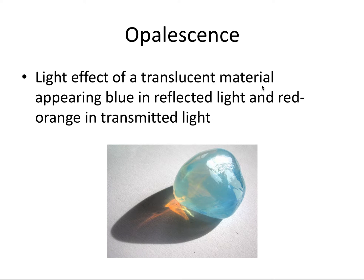The last of these is opalescence, which refers to the light effect of a translucent material appearing blue in reflected light and red-orange in transmitted light. Shorter wavelengths like blue light scatter within the tooth, whereas longer wavelengths like red light pass through it. This is an ideal trait to make something appear more translucent, like the incisal edge of an incisor, which is naturally translucent because only enamel is present in that region. So if you're trying to make the incisal edge of a crown look more translucent, you would employ opalescence.